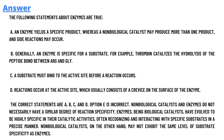An enzyme yields a specific product, whereas a non-biological catalyst may produce one or more products and side reactions may occur. Generally, an enzyme is specific for a substrate — for example, thrombin catalyzes these reactions.